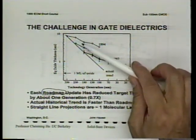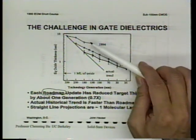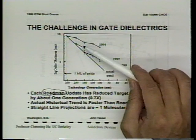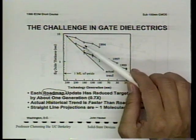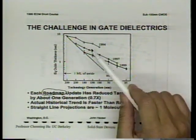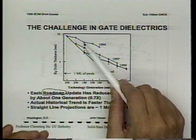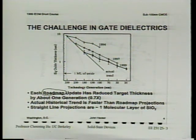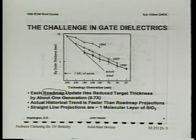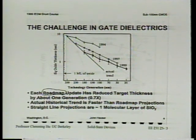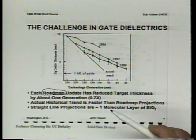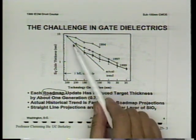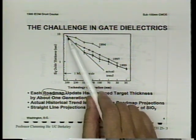For the 0.18 micron generation, about 20 Angstroms of SiO2 was used. For the next generation, perhaps 16 Angstroms with some nitrogen added — called oxynitride (SiON). Silicon nitride has a higher dielectric constant of about 7.5 compared to 3.9 for SiO2. Oxynitride may achieve around 6, which is already an improvement allowing some reduction in leakage.